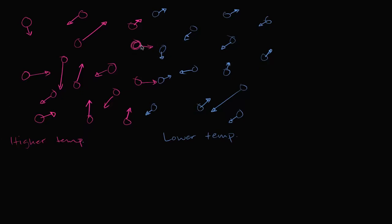After the collision, the magenta molecule might ricochet off in one direction, transferring some of its kinetic energy, while the blue molecule after the collision is going to move much faster in another direction. So with just that one collision, you have a transfer of kinetic energy from one molecule to the other. This is going to happen throughout the system — the faster molecules with more kinetic energy, as they collide, are going to transfer energy.